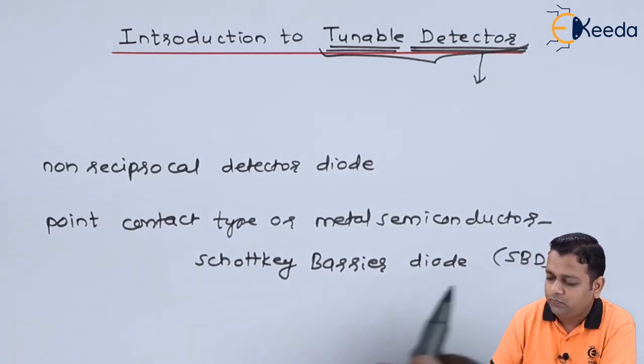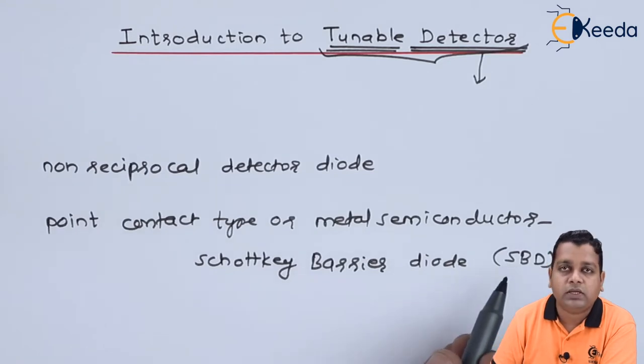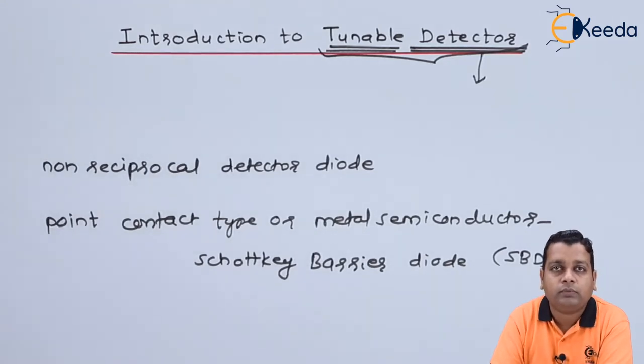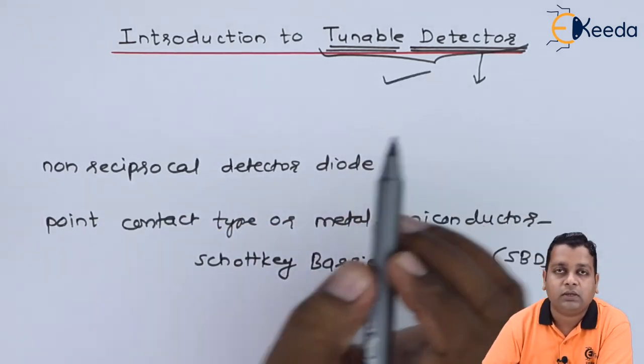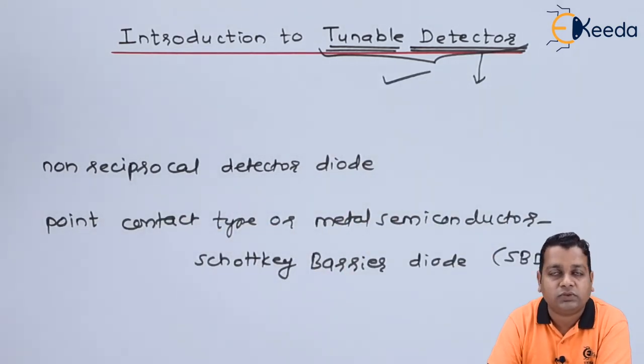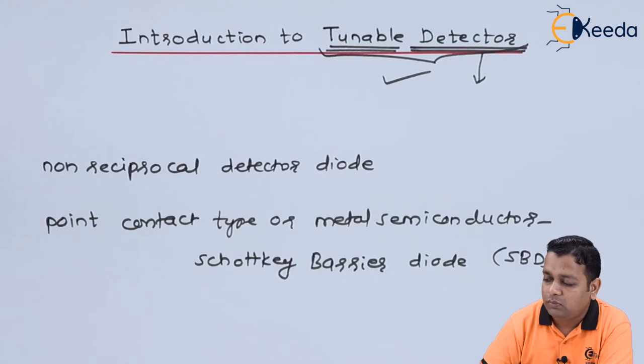The Schottky barrier diode can be abbreviated as SBD also. This is used inside the cavity of the slotted rectangular waveguide and it can be tuned to measure the various energy levels associated with the microwave signal that is propagating through it, hence the name tunable detector.